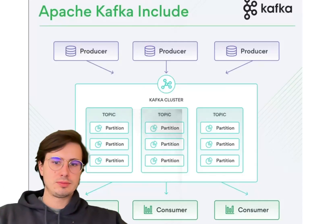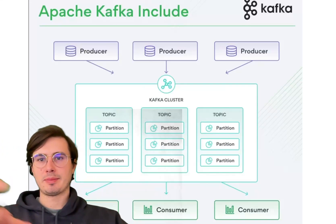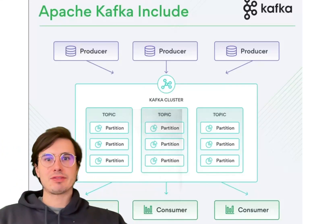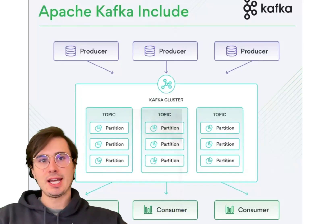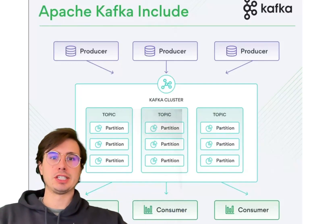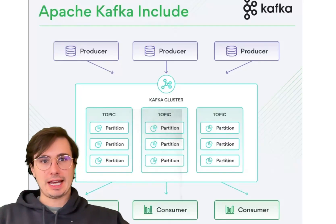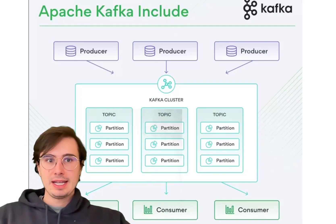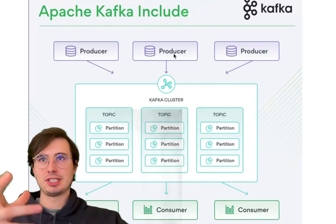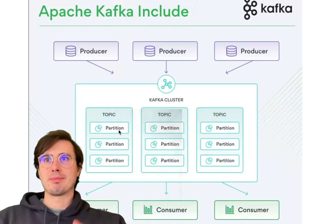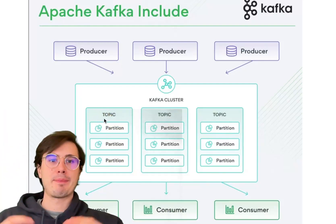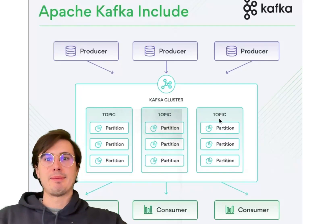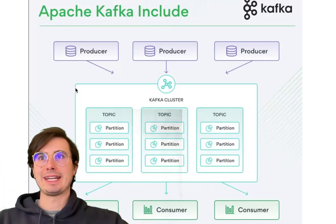Apache Kafka is an open-source distributed event streaming platform developed initially by LinkedIn and later released under the Apache Software Foundation. It's designed at its core to handle real-time, high-throughput event streaming and processing. It operates on a distributed log-based architecture where producer nodes produce messages to organized topics, which are partitioned into sub-folders of those individual topics.